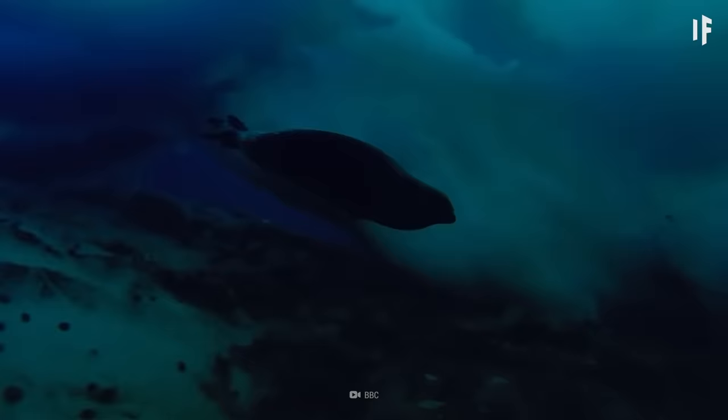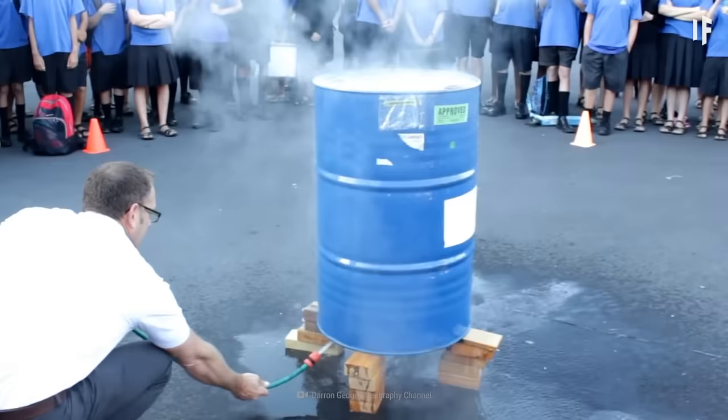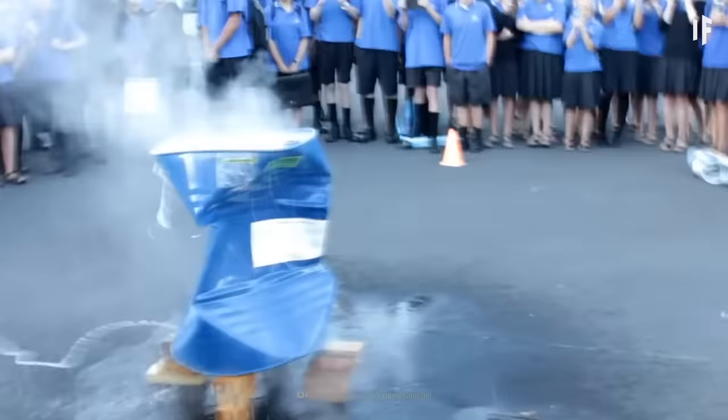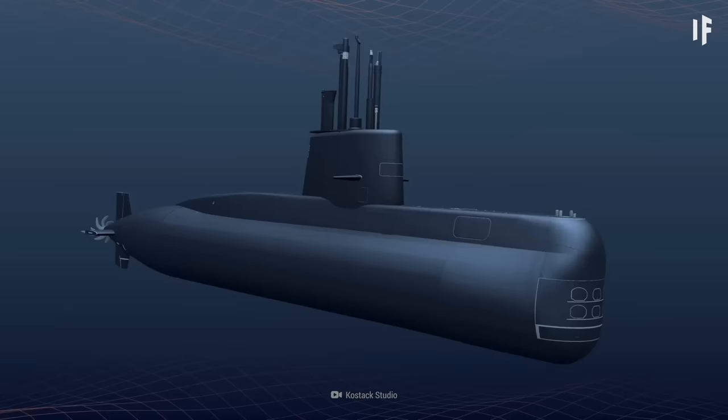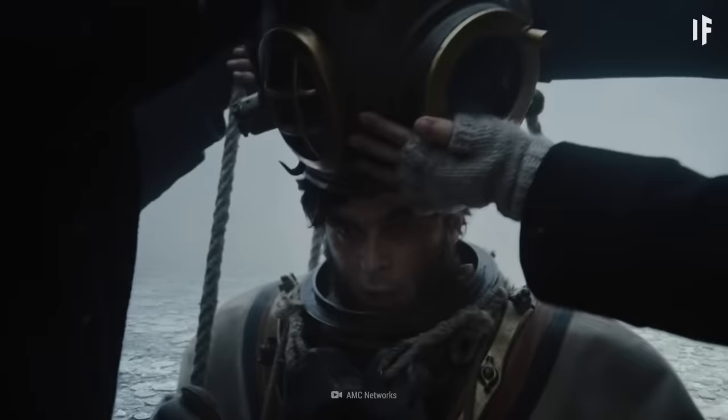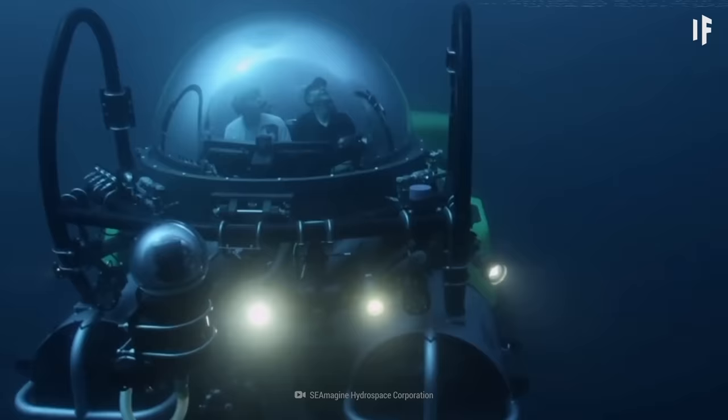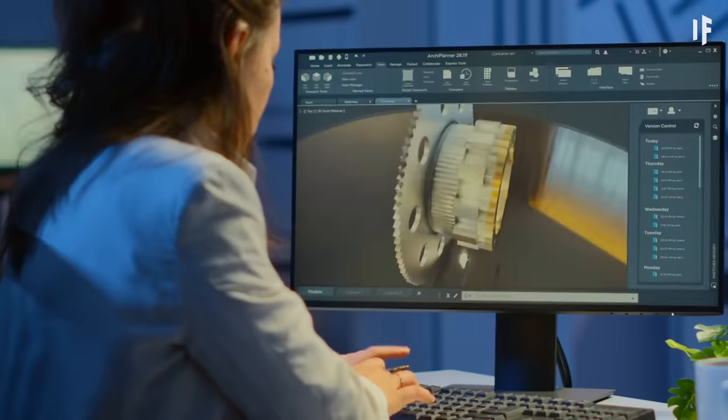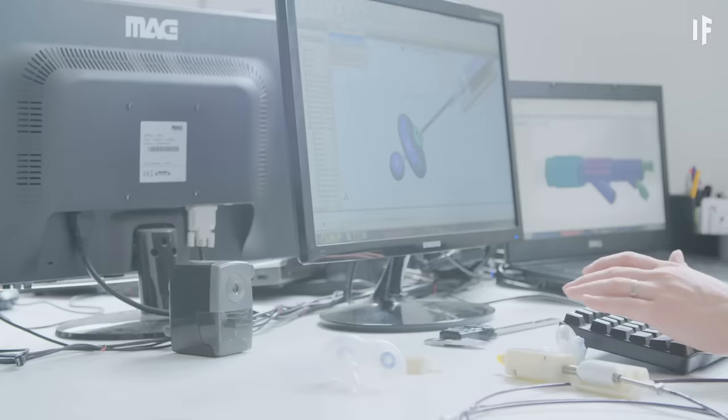While the water temperature around you would be just above freezing, you'd need to worry more about the crushing pressure. At the bottom of the Mariana Trench, it would be 1,100 times the atmospheric pressure at sea level. You wouldn't be able to survive in just a diving suit. You'd need to jump into a submarine designed to withstand such high pressure, and all the drilling equipment would need to be specifically designed for the depth.